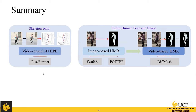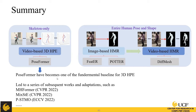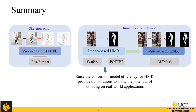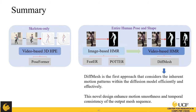In summary, PoseFormer has become one of the fundamental baselines for 3D HPE, leading to subsequent works such as MixSTE, M-MatchFormer, and PSTMO. For image-based HMR, Feater and Poder raise the concern of model efficiency and provide solutions showing potential for real-world applications. For video-based HMR, DiffMesh is the first approach considering inherent motion patterns within the diffusion model efficiently and effectively, enhancing motion smoothness and temporal consistency of the output mesh sequence.